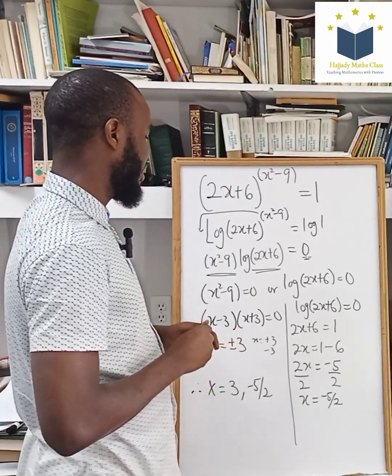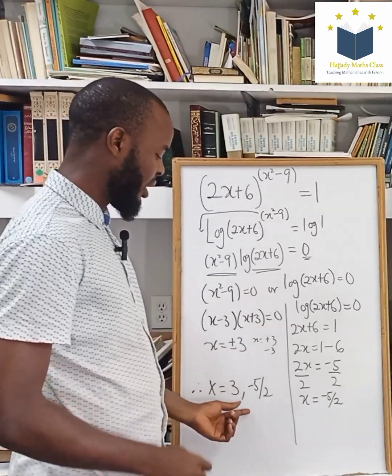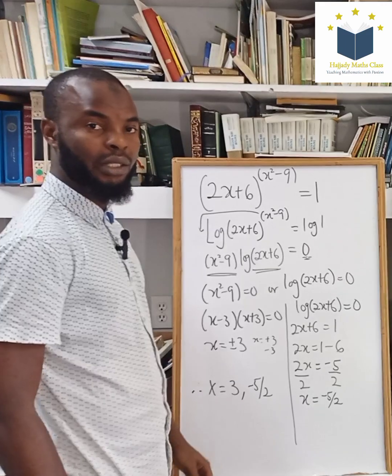So that shows that negative 3 does not fit into this equation. So my final equation is going to be positive 3 and negative 5 over 2.